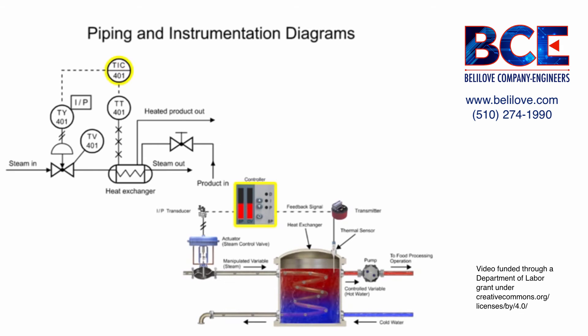Balloons with a solid dividing line indicate that the instrument is board mounted. An electronic signal from the controller is indicated by the dashed line.